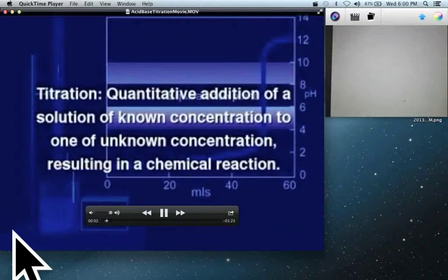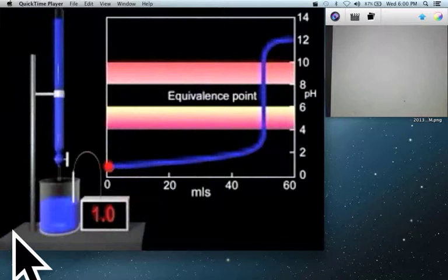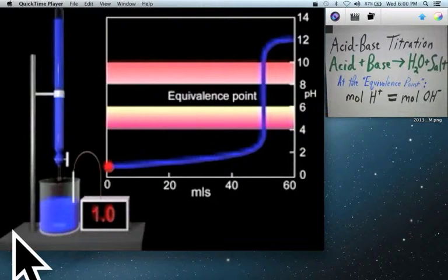Quantitative addition of a solution of known concentration to one of unknown concentration resulting in a chemical reaction is called titration. Acid-base titrations are among the most common. When a standard sodium hydroxide solution is added to a hydrochloric acid solution, the neutralization reaction occurs. A pH meter is employed to measure the acidity of the solution. To illustrate, let's add 0.100 molar base to precisely 50 mL of a 0.100 molar acid solution. The pH increases slowly at first. As the amount of base added approaches that required for complete neutralization, that is the stoichiometrically equivalent amount, the pH begins to increase more rapidly.